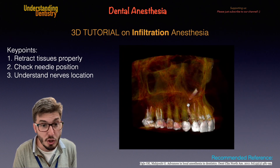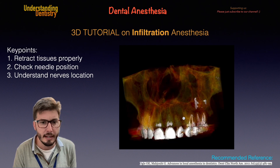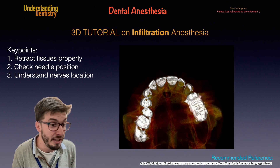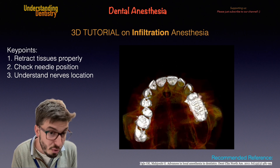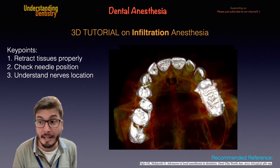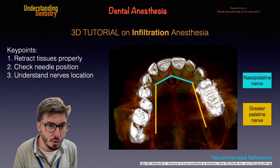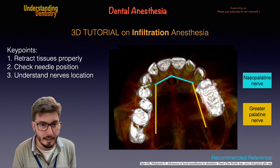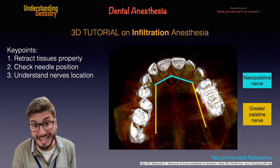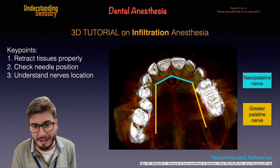Let's understand the locations of the nerves for the palatal anesthesia. This is the CBCT of a patient — there is even an implant displaced in the maxillary sinus. We have an occlusal view of the maxilla showing two main important nerves for the palatal soft tissues: the nasopalatine nerve, which serves the tissues between the canines anteriorly, and the greater palatal nerve, which serves the palatal soft tissues from canine to the second and third molars posteriorly.